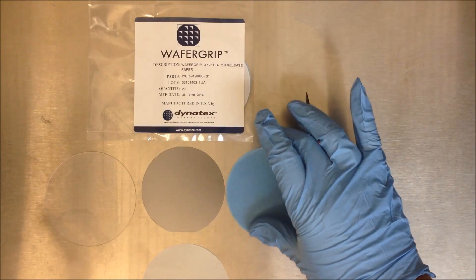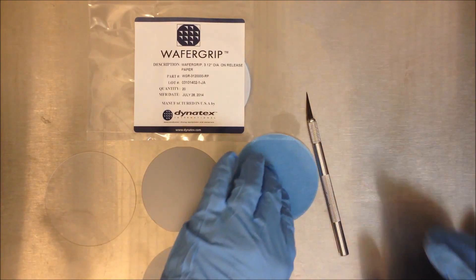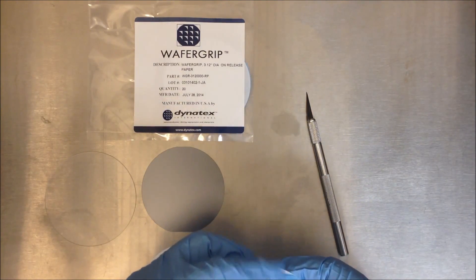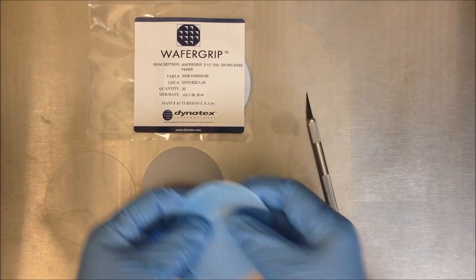Step one is to take a piece of wafer grip and gradually raise the edge by rubbing it with your finger like so.